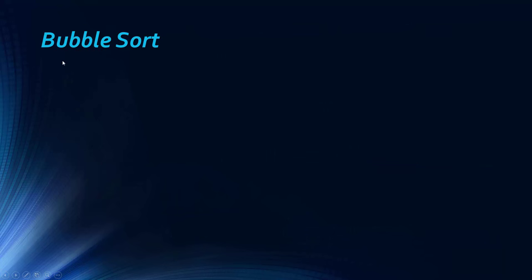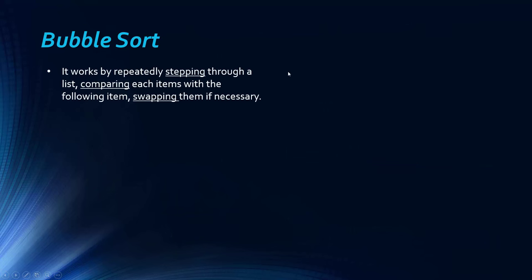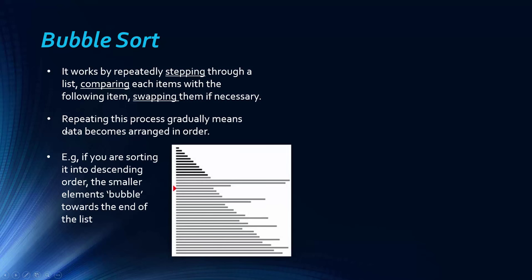We can move on to the next one and that's bubble sort. Bubble sort is not really used in real life at all because it's not very quick. It's not very efficient. Kind of the opposite of quicksort. And what it does, it repeatedly steps through a list and it compares each item, each adjacent item, and then swaps them if they need to. And repeating this gradually means that data becomes arranged in order. So the idea is, and you can hopefully see what's happening in this diagram, this animation, is that the smaller ones bubble up to the top, like a fizzy drink, allegedly.